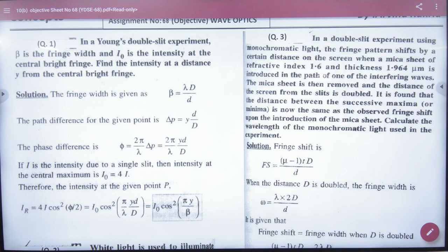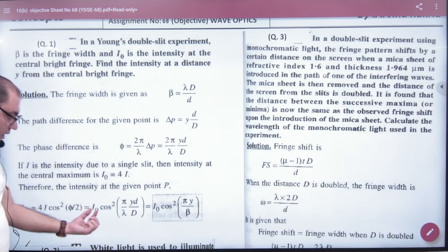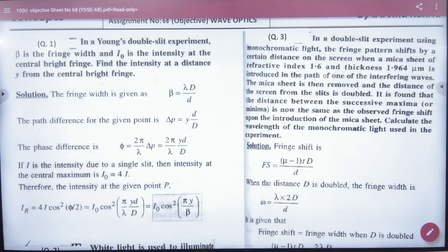See in this, Young's experiment has beta fringe width and i0 intensity at the central bright fringe. Now in the central bright fringe, what is the intensity? 4i0. What are you saying here? i0. So we will not use the formula intensity i0 cos squared phi. Now what are you saying? Find intensity at a distance y from central bright fringe.